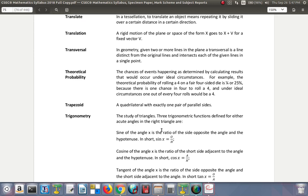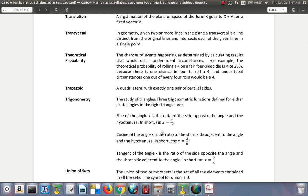Transversal: In geometry, given two or more lines in the plane, a transversal is a line distinct from the original lines which intersects each of the given lines in a single point. So again, two or more lines.